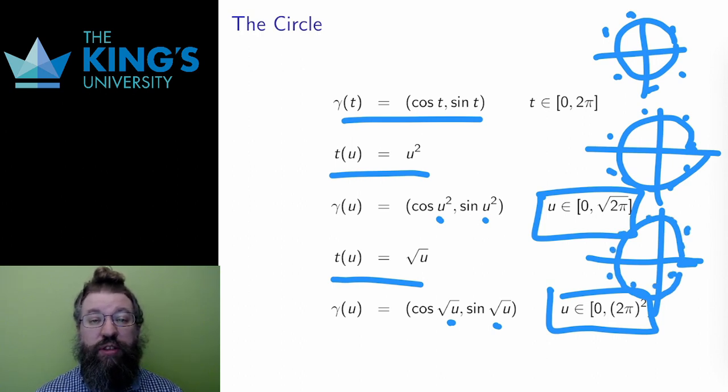The point of these reparametrizations is to clearly distinguish between the shape, which is the circle, and the rate of movement along that shape. There are infinitely many parametrizations of any one shape. This is the richness of parametric curves, to include all of this information about movement in their definition.